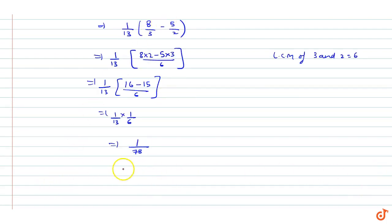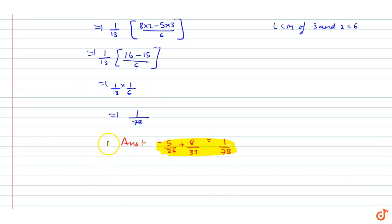Our answer is minus 5 by 26 plus 8 by 39 equal to 1 by 78. This is our answer. And as 1 by 78 can be expressed in the form of P by Q, it's a rational number. Hence proved.